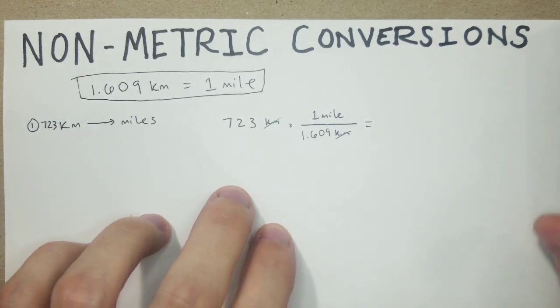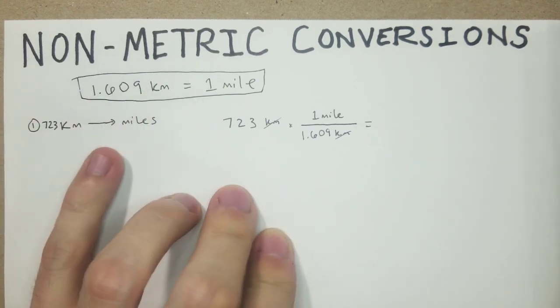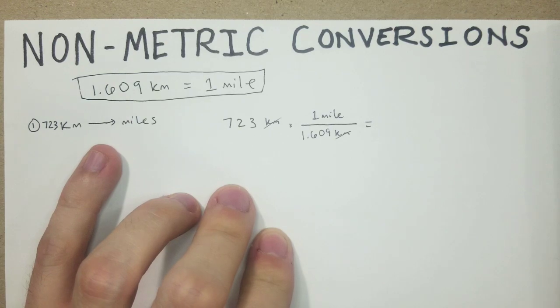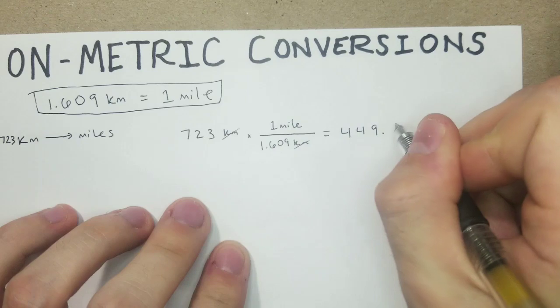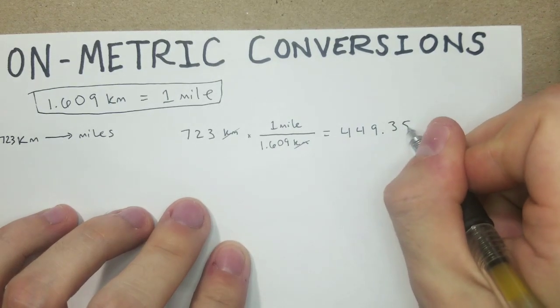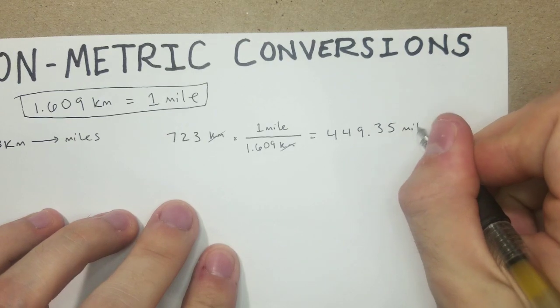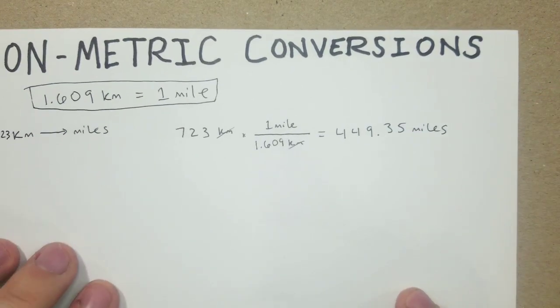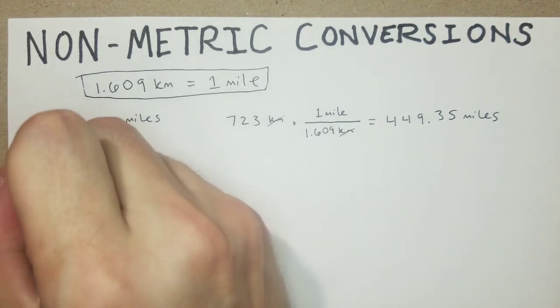Now we're simply going to take the 723 and divide it by how many kilometers are in a mile. 1.609 equals, so what I got is 449.35, rounding to two decimal places, miles. So that one's not too bad. That gives us a brief overview of how a lot of these are going to work.